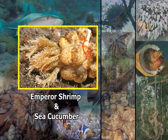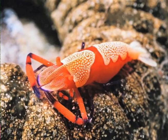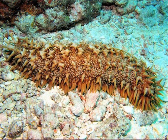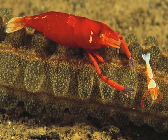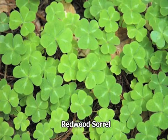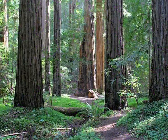Emperor shrimp and sea cucumbers also constitute a nice example of commensalism. The emperor shrimp is a small crustacean usually found in the Indo-Pacific region that hitches a ride on sea cucumbers. These shrimp get protection as well as transportation to move about in larger areas in search of food without expending any energy of their own. They get off their host to feed and get back on for a ride when moving to another area. The last example is redwood sorrel, a small herb that benefits from growing in the shade of tall redwood trees with no known negative effects on the trees.